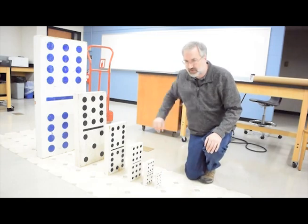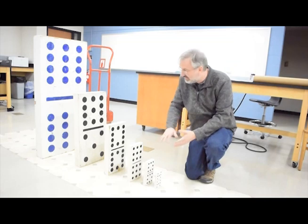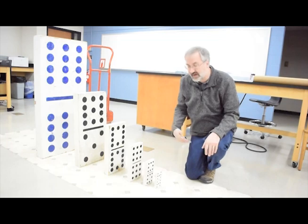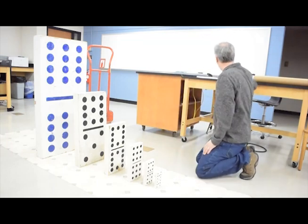This is an exponential growth curve. So every time, every generation, every cycle through this curve, the height of the domino increases by a factor of 1.5. So let's set the rest of them up, and see if we can get this to work together.